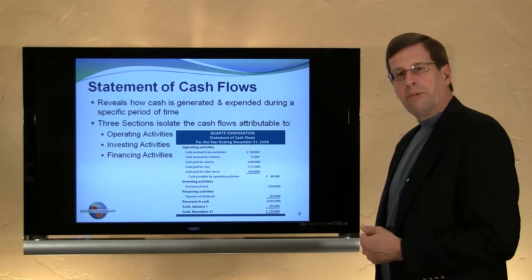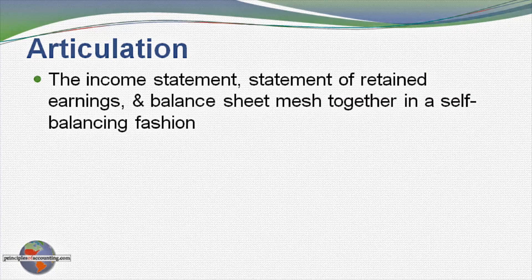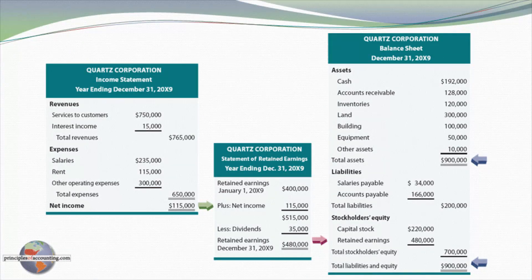Finally, consider how the financial statements articulate, or tie together, in a self-balancing fashion. Revenues minus expenses gave rise to net income of $115,000, which flowed through — shown by the green arrow — into the statement of retained earnings. Adding that to beginning retained earnings and subtracting dividends gave ending retained earnings of $480,000, which also appeared on the balance sheet, allowing total assets to equal total liabilities plus equity.